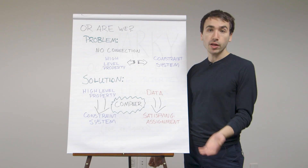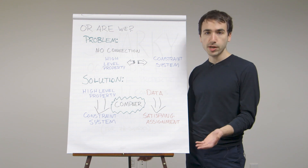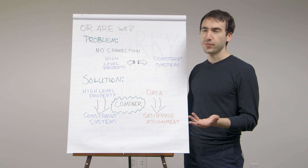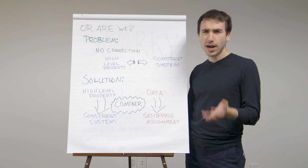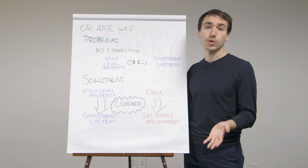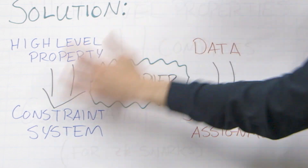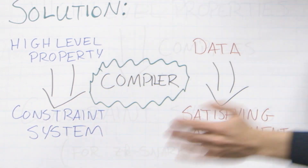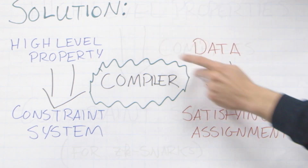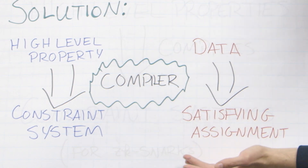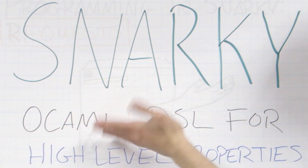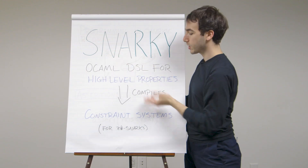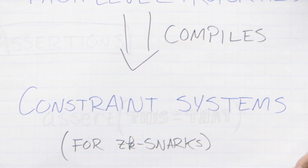Instead of just sending someone a compiled binary, you send them a program in a high-level language like OCaml or Haskell, and then they can compile it themselves and read the high-level program to see it does what they expect. We're going to write a compiler that translates from a high-level description of our property into the low-level assembly code of a constraint system, and translates the data we want to prove things about into a satisfying assignment for that constraint system. That's what Snarky does.